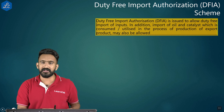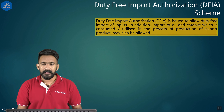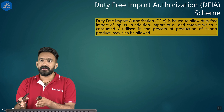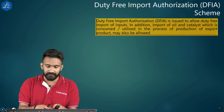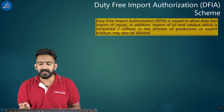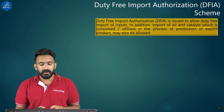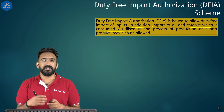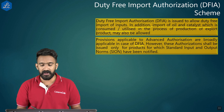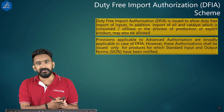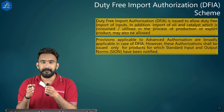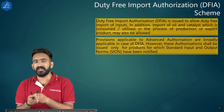With Advanced Authorization, if you are making an export product, whatever inputs are required can be imported without paying any duty. DFIA is framed on the same basis. Additionally, import of oil and catalyst consumed or utilized in the process of production of the export product may also be allowed. Provisions applicable to Advanced Authorization are broadly applicable to DFIA as well, however DFIA shall be issued only for products for which SION have been notified.